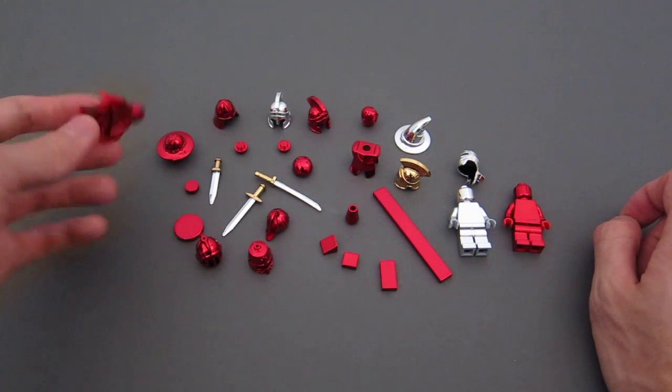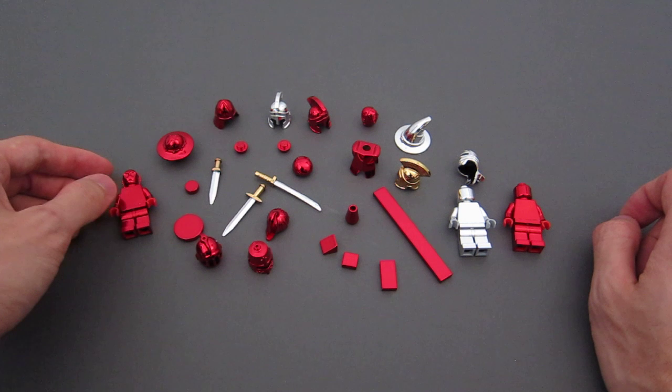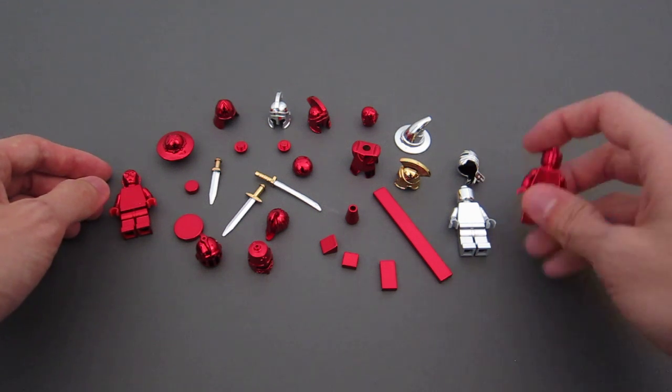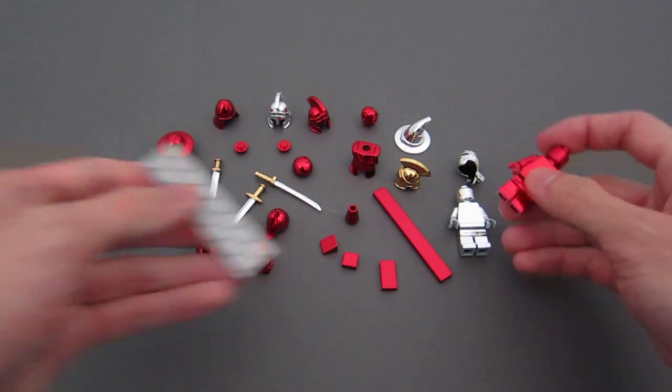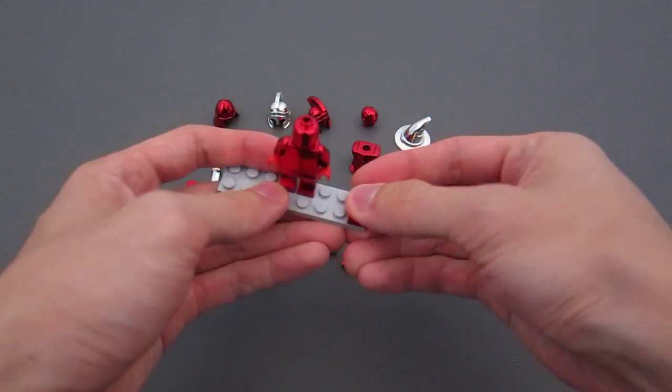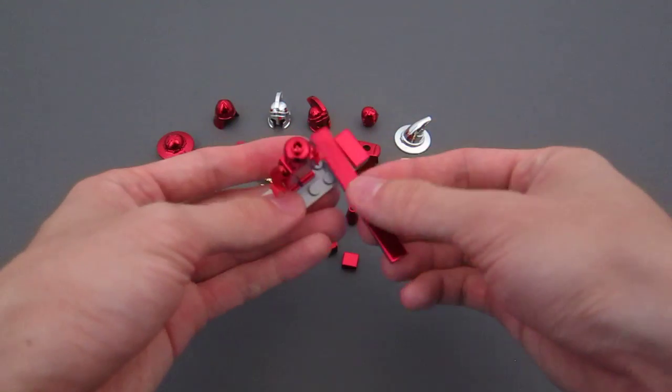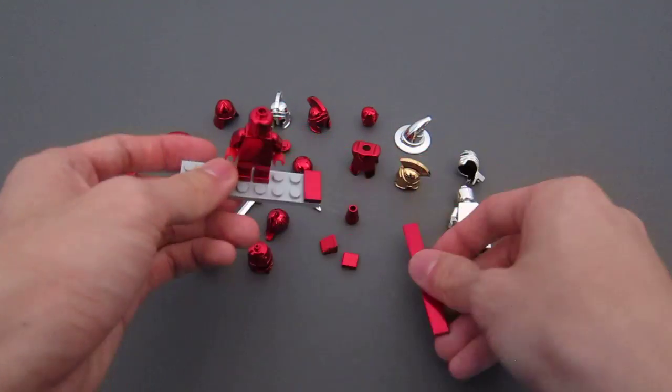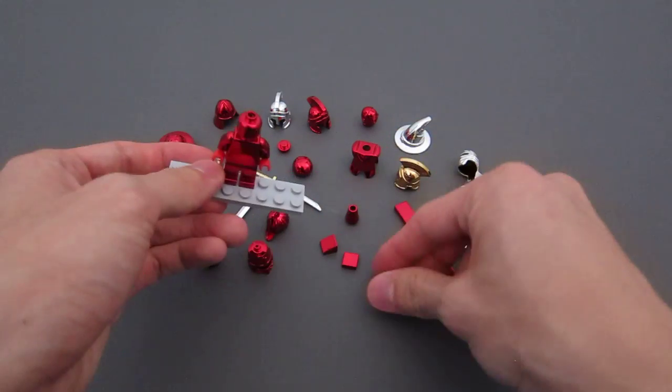So that's the overview of how much they cost. And in terms of their clutch power, Chrome Bricks has very high quality items. They fit just like normal LEGO bricks. There's actually no difference in terms of clutch when you apply them to normal LEGO parts.